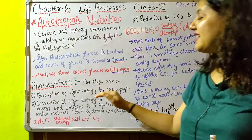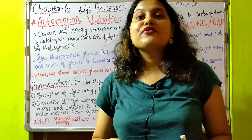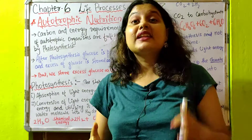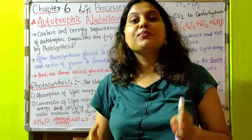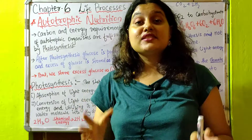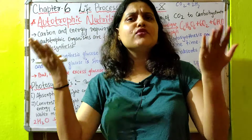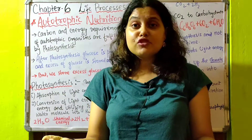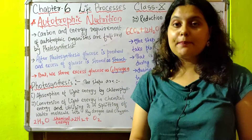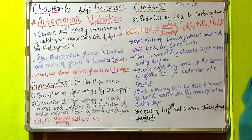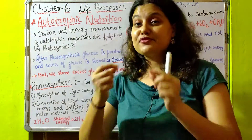The first step is absorption of light energy by chlorophyll. Chlorophyll is the green color pigment in plants that is used to absorb light energy. That is the reason why only green-colored plants can perform photosynthesis — because if there is no green pigment, there is no absorption of light, and the first step of photosynthesis cannot happen.